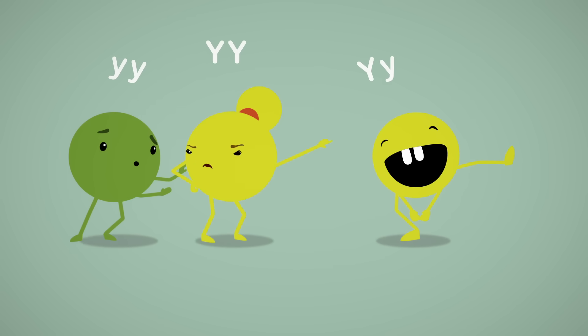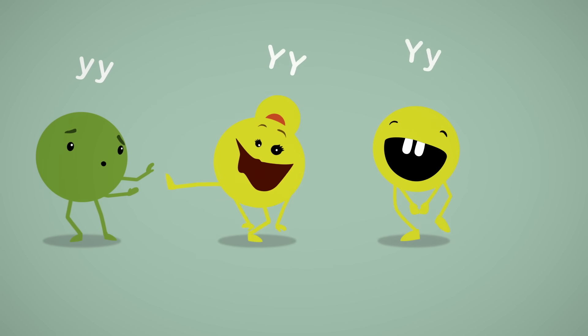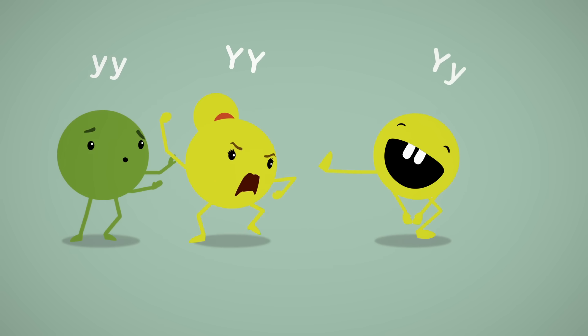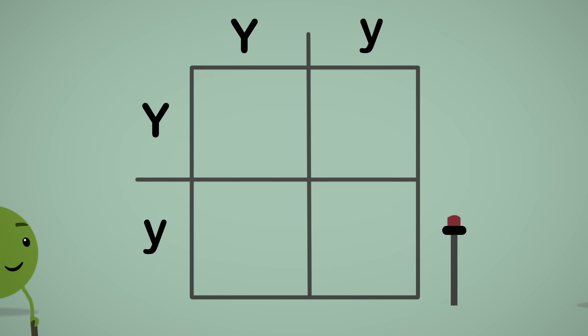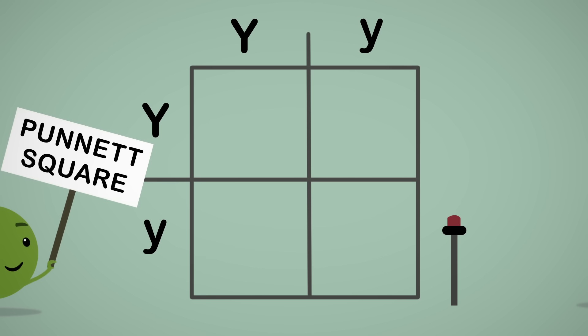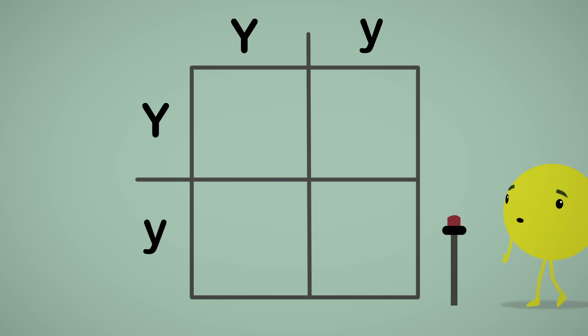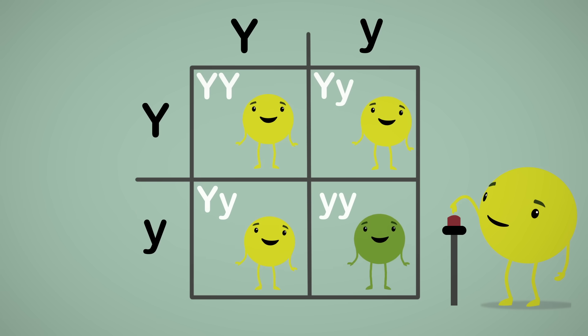To clearly visualize how alleles are distributed amongst descendants, we can use a diagram called the Punnett square. You just place the different alleles on both axes, and then you figure out the possible combinations.